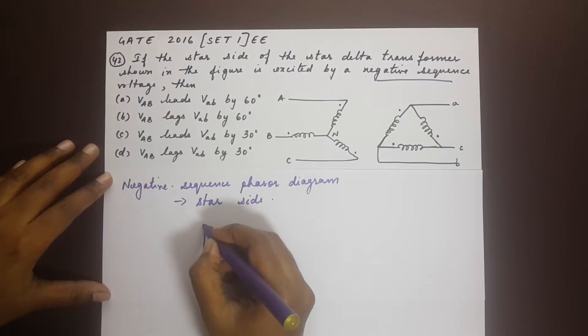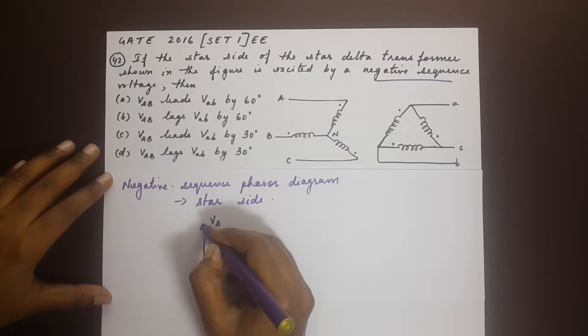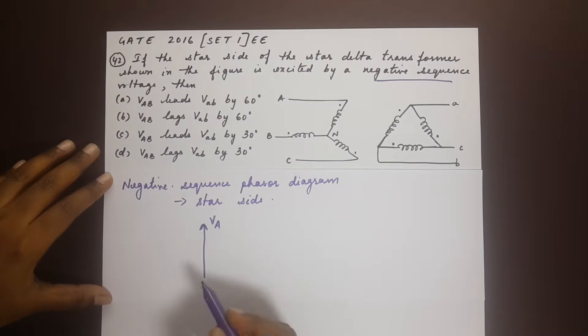So what we have here is we have VA, the voltage of A, taken as the one on the y-axis. You can consider it that way. And because it says negative sequence, our next line would be here representing VB.